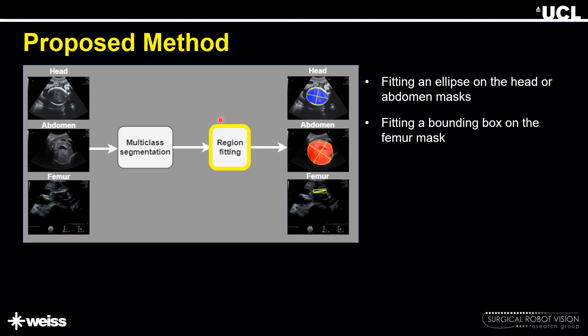Next, we performed region fitting on the obtained segmentation mask. We know that head and abdomen are elliptical in shape while the femur is oblong. We use this information to fit an ellipse on the head and abdomen segmentation masks, and fit a bounding box on the femur mask.